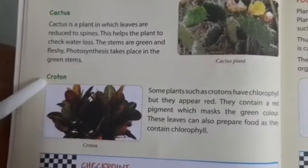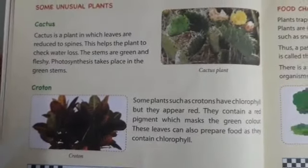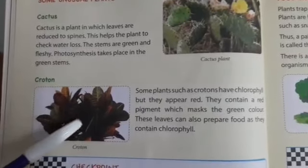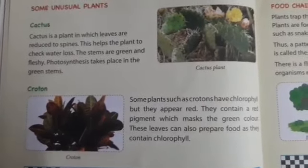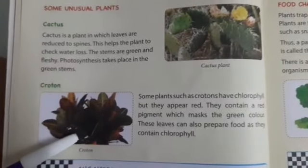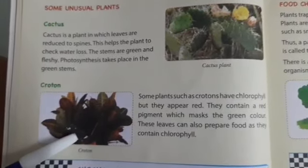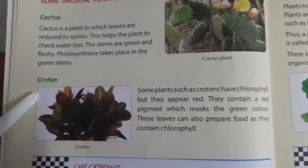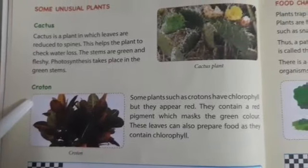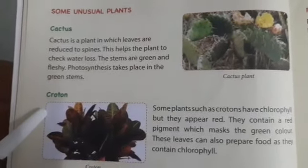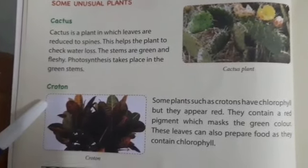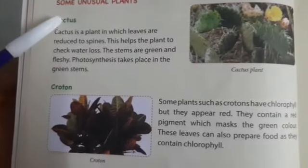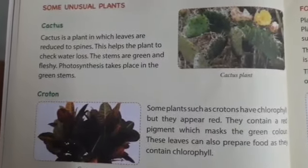The next plant is croton. Croton is also a normal-looking plant. Ismein aap ko green leaves dikhhengi, but you will also see red leaves. They contain a red pigment which masks the green color. And these leaves also prepare food as they contain chlorophyll. The process of making their own food by the plants is known as photosynthesis. So these were the two examples of some unusual plants that are really different from the other plants.